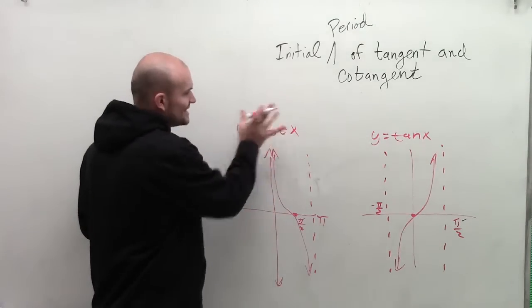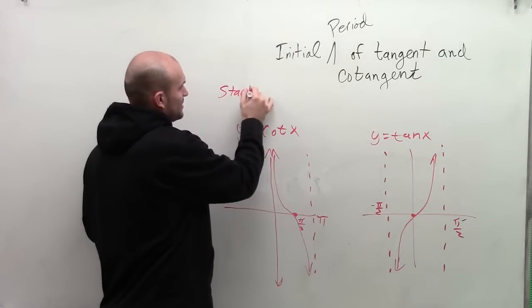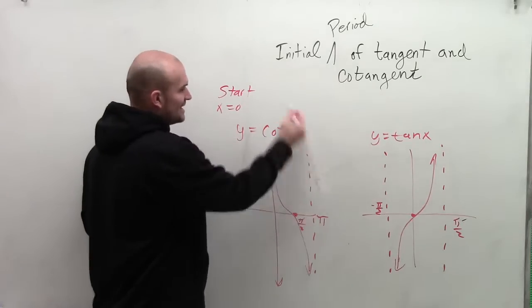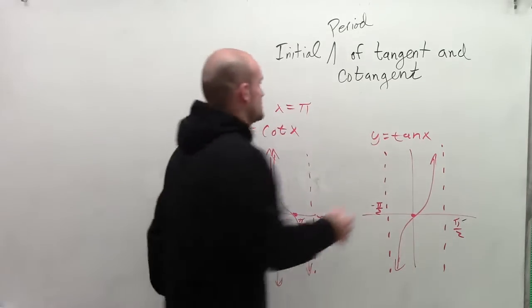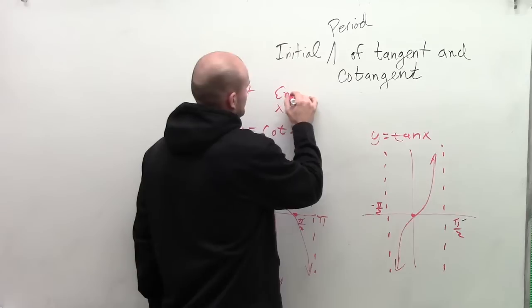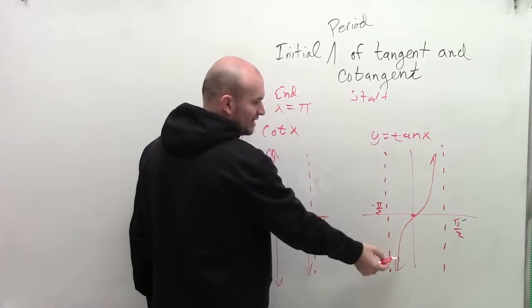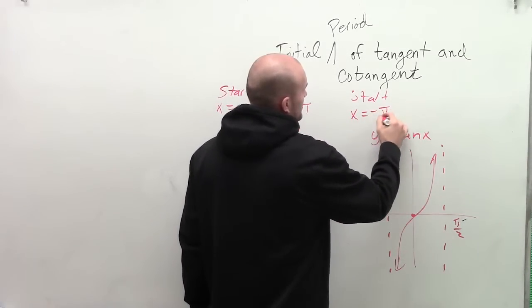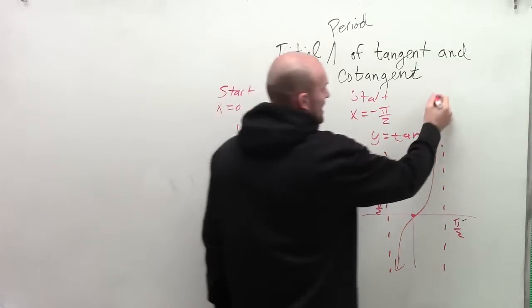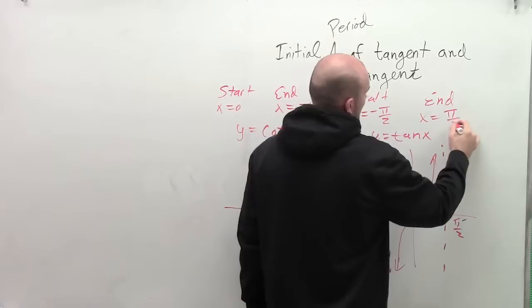So in looking at the initial period of cotangent, we can say that the start of the initial period is when x equals 0, and the end is when x equals pi. For tangent, we look at the start is not at 0, but the initial period starts at negative pi halves. So you can say x equals negative pi divided by 2, and then the end is at x equals pi halves.